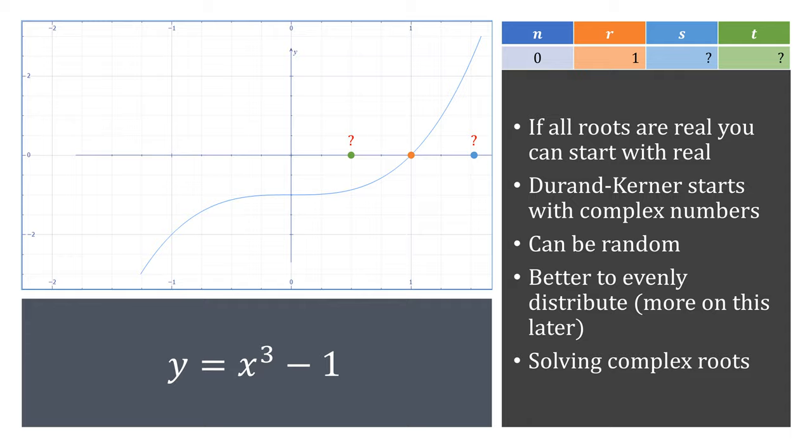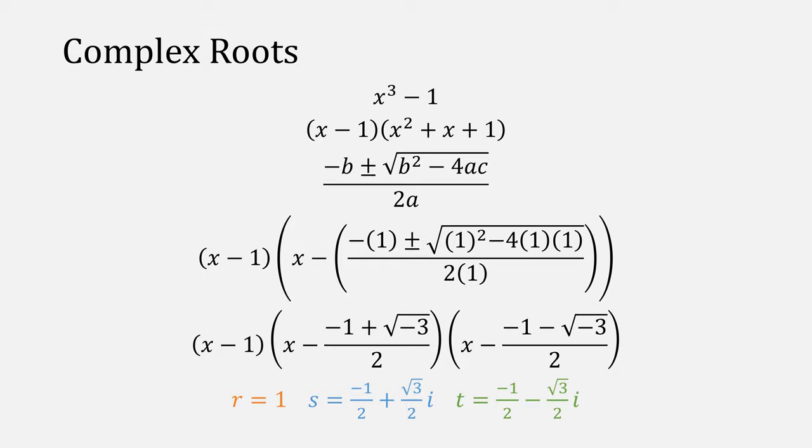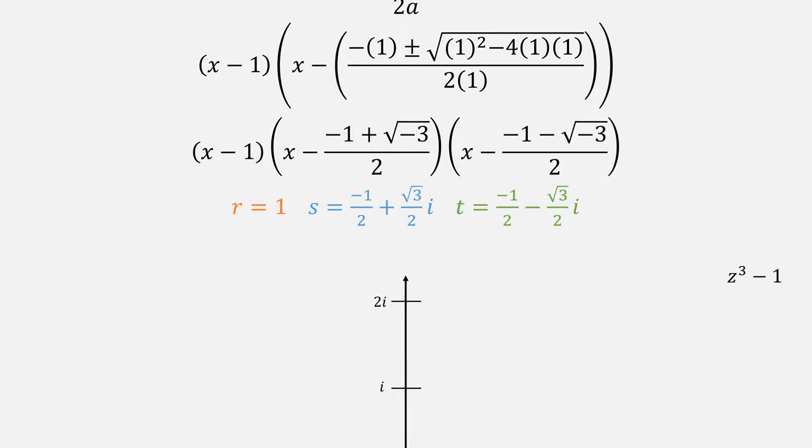Let's look at how we might solve for complex roots normally. For our polynomial of x cubed minus 1, we can rewrite it to be this form. For the term on the right, we can solve it using the quadratic equation, giving us this expression, which simplifies to these three terms, and therefore we know all three of our roots, where i is the square root of minus 1.